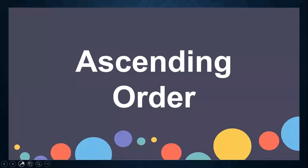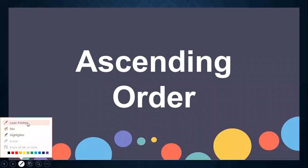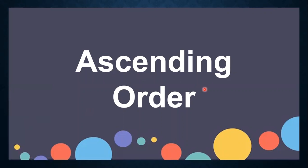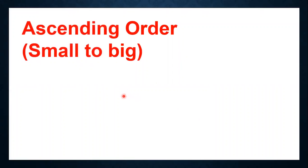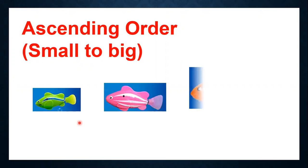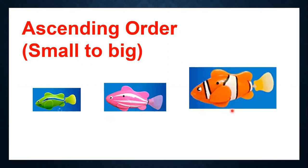Hi children, hope you all are doing well. So today we will learn ascending order. Ascending order means when we arrange things or numbers from small to big, it is called ascending order. When we arrange things or numbers from small number to big number, we call it ascending order. Remember this. Now let's see some examples.